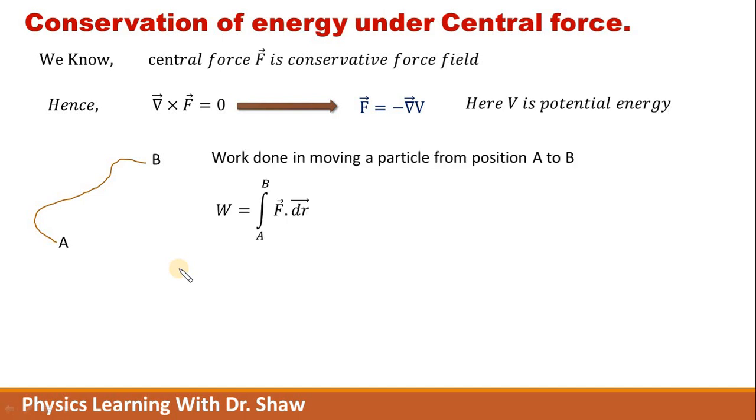That can be easily seen from this exercise also. If you want to calculate the work done in moving a particle from position A to position B, then W will be the integration over F dot dr from A to B. We are taking here the vector quantity F dot dr. Just simply substitute the F. We have already seen F is equal to minus grad V. Just substitute it here.